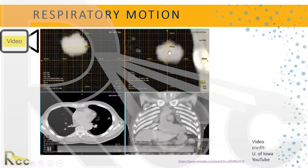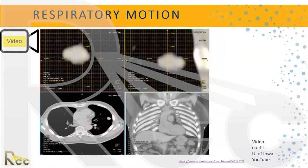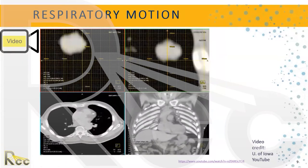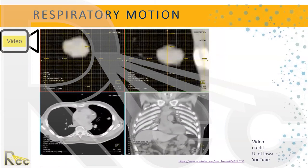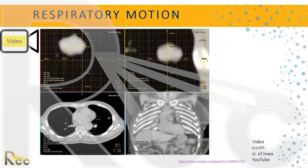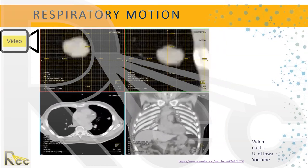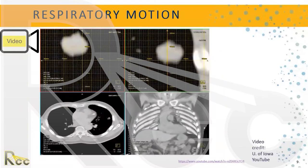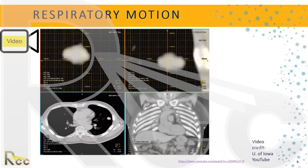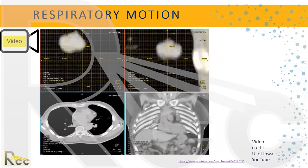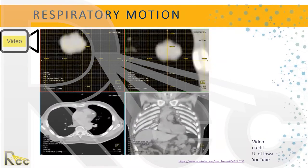If a tumor is attached to the chest wall, it might not move as much as something in the middle of the lung that isn't attached to soft tissue. But we still need to know what's going on with it.